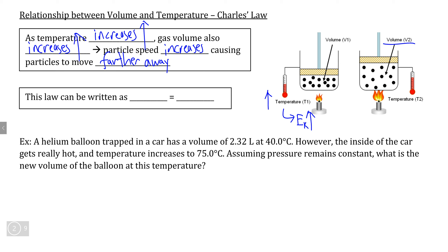Unlike with gas pressure, volume and temperature have a direct relationship, meaning that as one increases, the other proportionally increases as well. We can write out Charles's Law similarly to Boyle's Law: the volume divided by the temperature at one condition equals the volume divided by the temperature at a different set of conditions, allowing us to find an unknown temperature or volume given the other data.